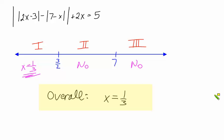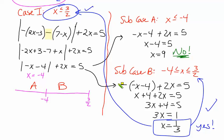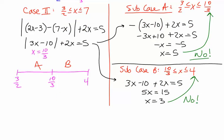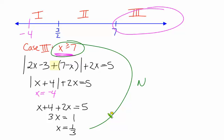Hopefully you understand the process for working with nested absolute values. Start with the innermost ones, find their key numbers, and when you get to another absolute value of an algebraic expression, look for additional key numbers and see if they fall in the case you're working with. If they do, you'll have subcases. If they don't, just keep going as in the third case here. These problems can get quite sophisticated, so be careful and organized. The ability to work with a number line is key, both for these problems and for success in AP Calculus.